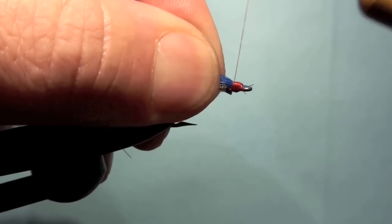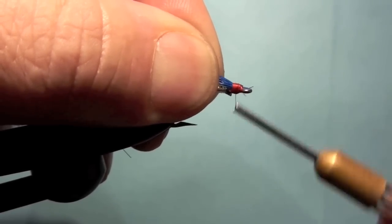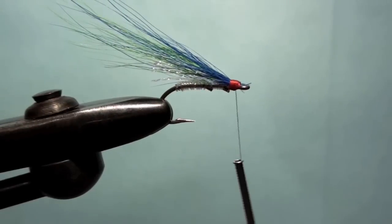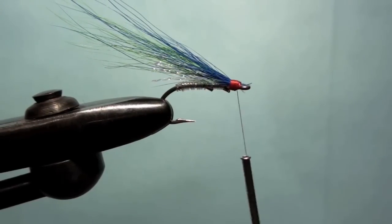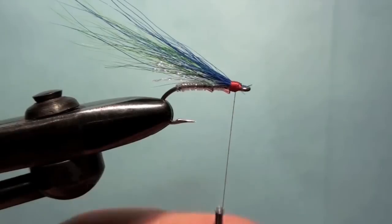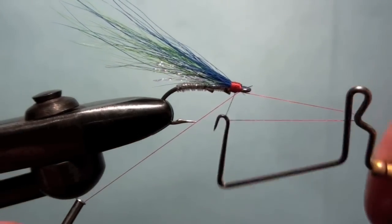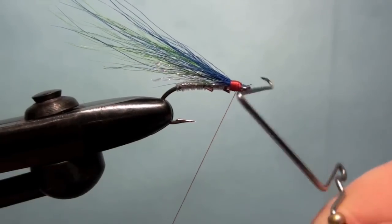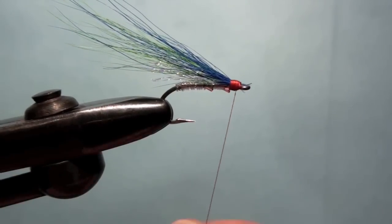Like I said I like using red. It kind of shows up good. Something like that. I mean you don't have to be too picky with it. Then I just get my handy-dandy whip finisher out. Slap a whip finish on there. Three or four turns. Clip off your tying thread.